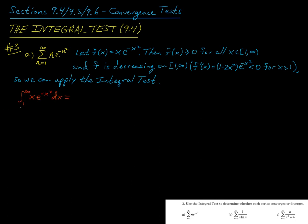To do that, consider this improper integral and we'll compute it using a substitution. Let u equal x squared, so du is 2x dx. For the bounds of integration, when x is 1, u is 1 squared which equals 1, and as we let x approach infinity, u also approaches infinity. The exponential term becomes e to the negative u.